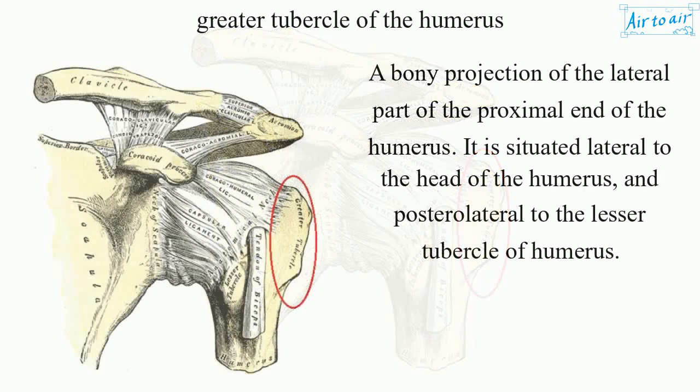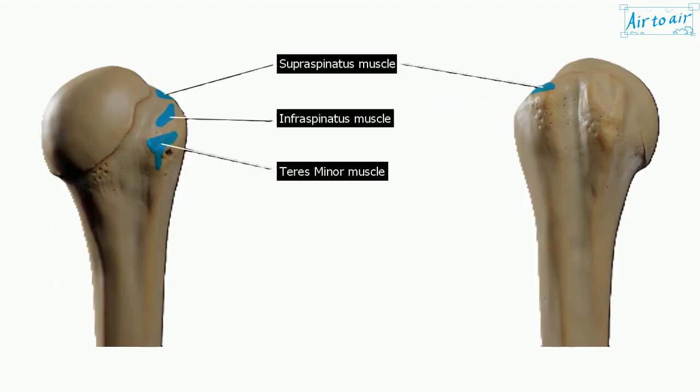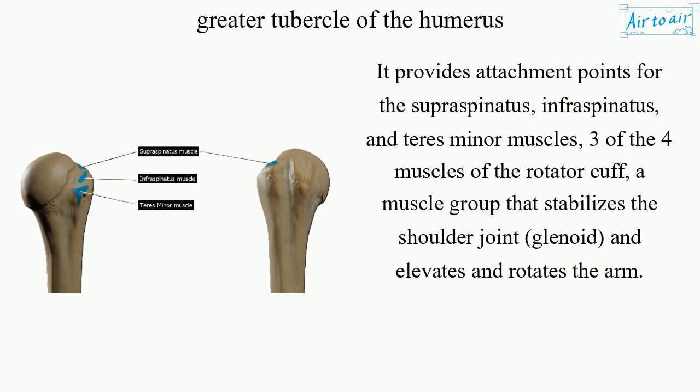The greater tubercle of the humerus is a bony projection of the lateral part of the proximal end of the humerus. It is situated lateral to the head of the humerus and posterolateral to the lesser tubercle. It provides attachment points for the supraspinatus, infraspinatus, and teres minor muscles — three of the four muscles of the rotator cuff.